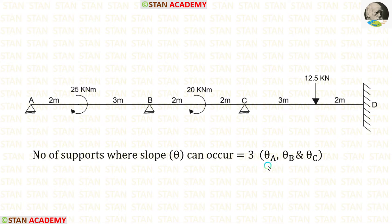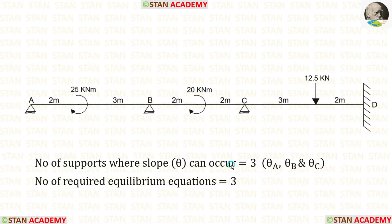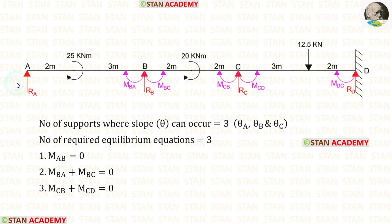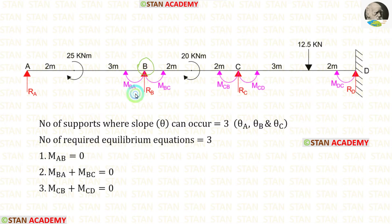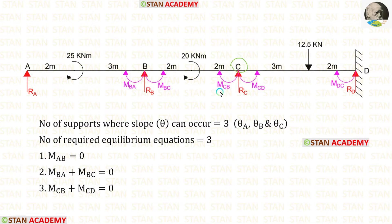So in this analysis there are three unknowns. If we calculate these three unknowns, we can easily find the final moments. To calculate them, we need three equilibrium equations. At point A, MAB equals 0 (simply supported end) — this is the first equilibrium equation. At joint B, MBA plus MBC equals 0 — this is the second equation. At joint C, MCB plus MCD equals 0 — this is the third equation.